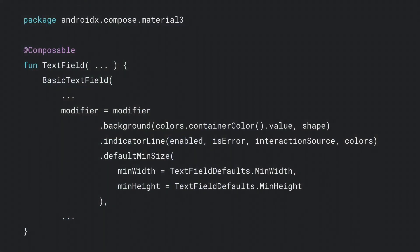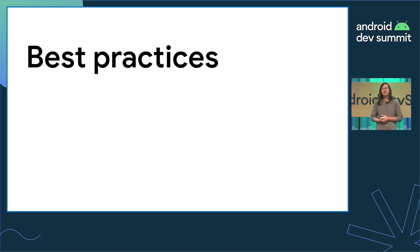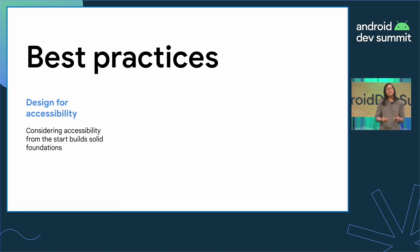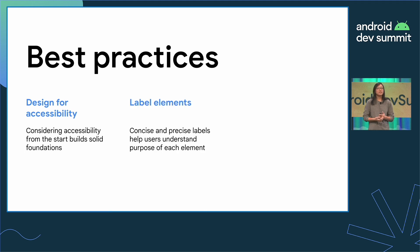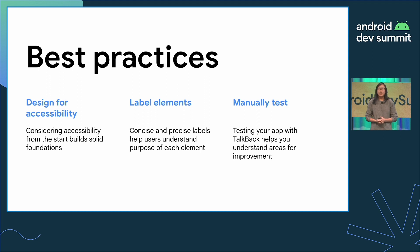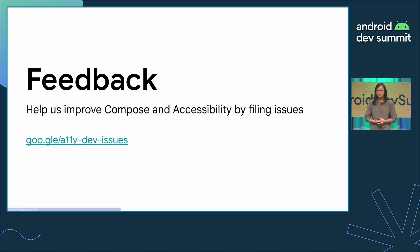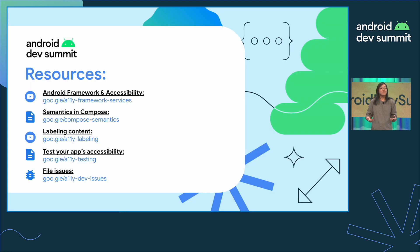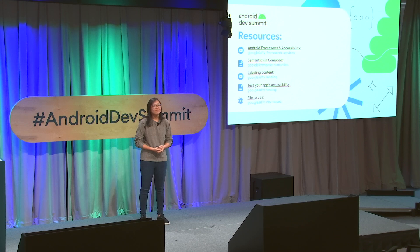For example, if you wanted to build your own text field, a good way to start would be looking at how the text field is built in Material 3 based on the basic text field from the Compose Foundation library. To wrap it all up, here are a few general accessibility best practice tips: first, design for accessibility from the start to build solid foundations. Next, always remember to label your elements — concise and precise labels help all users understand the purpose of each element. Finally, always try to manually test your app with an accessibility service such as TalkBack to understand areas for improvement. We're listening to your feedback, so if you have any suggestions about how to improve Compose and accessibility, feel free to file an issue.